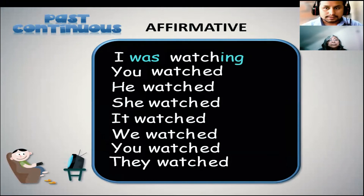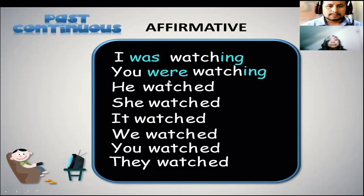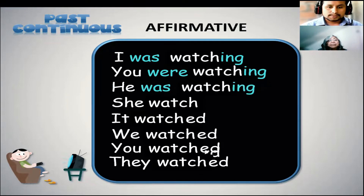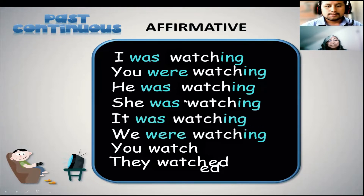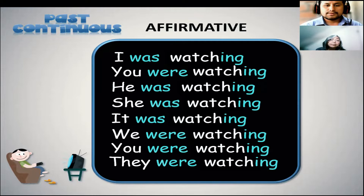We need to drop the -ed ending. As you can see, 'I watched' — the -ed is dropped for you to place 'was', and then we add the verb with -ing: 'I was watching.' You were watching. He was watching. She was watching. It was watching. We were watching. You were watching and they were watching. So that works for all of the subjects. This is the formula to create sentences.